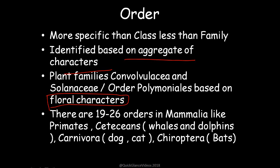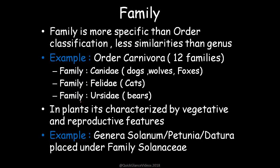Family is more specific than order, classified with fewer similarities than genus — it comes between order and genus. For example, order Carnivora has 12 families: Canidae, Felidae, and Ursidae. Canidae includes dogs, wolves, and foxes; Felidae includes cats; Ursidae includes bears. In plants, family is characterized by vegetative and reproductive features.